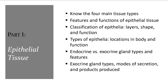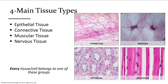For epithelial tissue, these are the learning outcomes. There are four main tissue types: epithelial, connective, nervous, and muscular tissue. Every cell or tissue in our body belongs to one of these four groups. You will be asked about these four groups. We will go into detail of each group, but you should still know the big picture — what type of tissue or what cell is in which of these four categories.